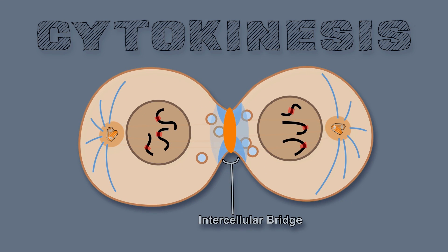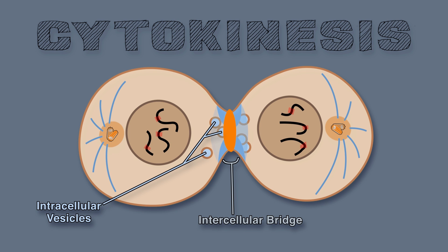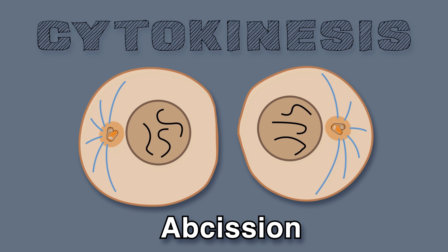Intracellular vesicles fuse, adding surface area to compensate. At the bridge's center the midbody is found, where the interpolar microtubule leftovers still abound, packed in dense matrix material at the spindle midzone. Abscission or final cleaving of two daughter cells is shown.